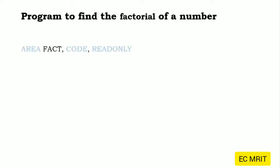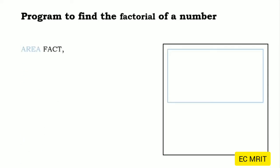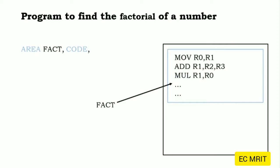For writing any program we need to write the AREA directive, which gives the area a name. That area will be code memory and it is read-only memory. We will define an area and give it the name 'factorial' — F-A-C-T. This area is written with CODE and it is read-only memory.